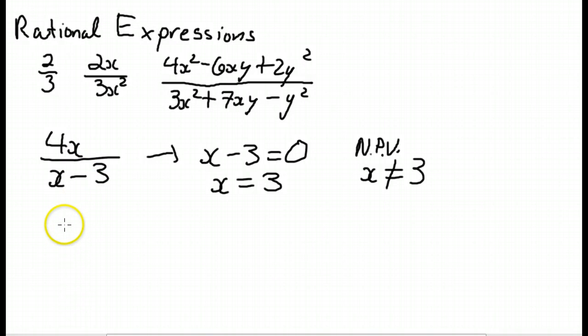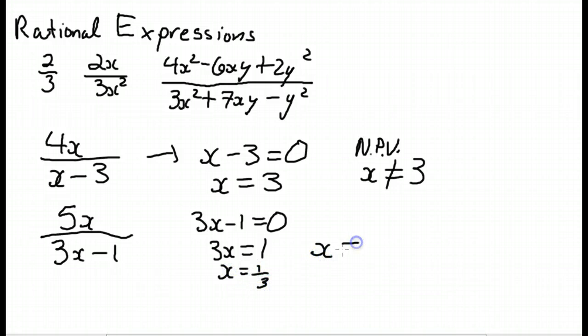Let's do another couple just for the heck of that: 5x over 3x minus 1. So what do we do? We say, I need to know what value of x will make 3x minus 1 equal to 0, which means 3x is 1 and x is 1 third. So x cannot be 1 third. That's the non-permissible value.